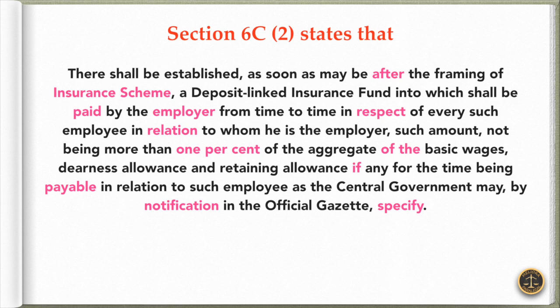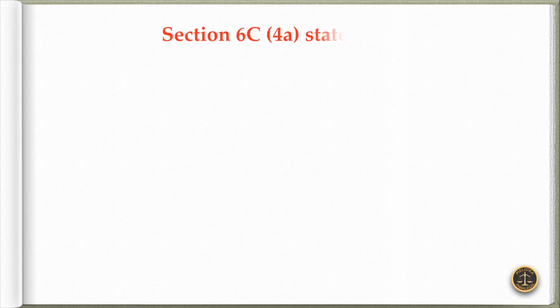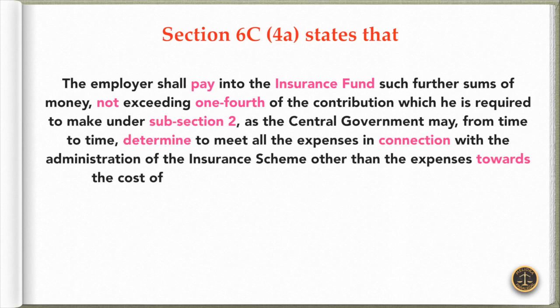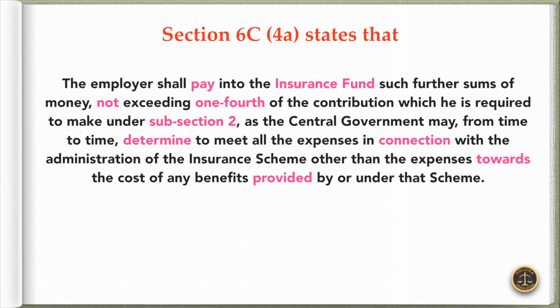Such amount, not being more than one percent of the aggregate of the basic wages, dearness allowance, and retaining allowance, if any, for the time being payable in relation to such employee, as the central government may by notification in the official Gazette specify. Further, Section 6C states that the employer shall pay into the insurance fund such further sums of money, not exceeding one-fourth of the contribution required under subsection 2, as the central government may from time to time determine, to meet all the expenses in connection with the administration of the insurance scheme other than the expenses towards the cost of any benefits provided by or under that scheme.